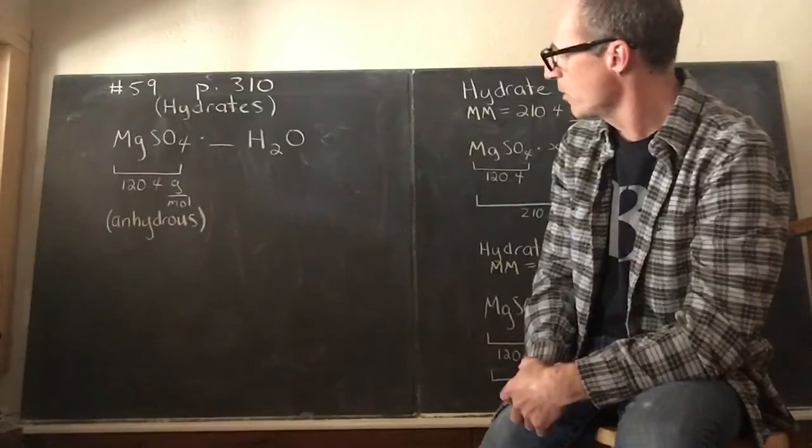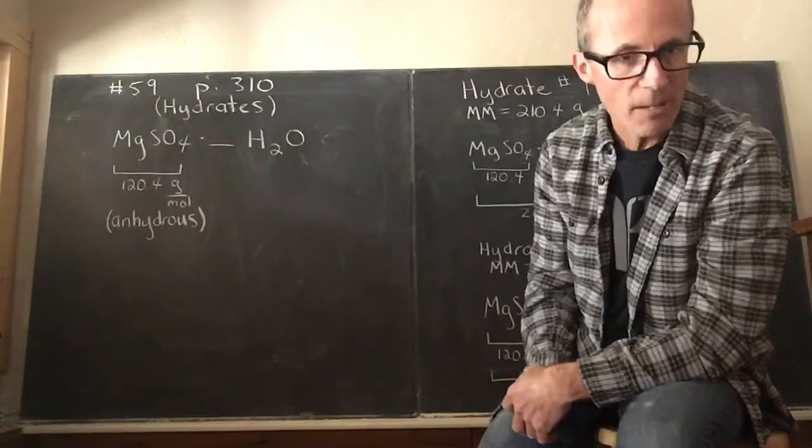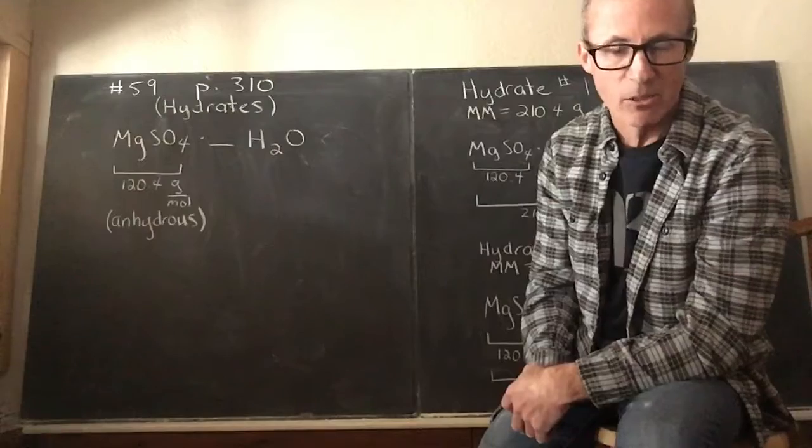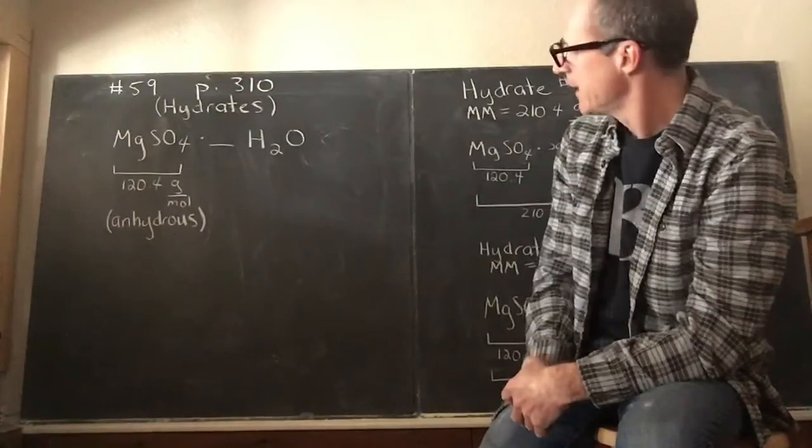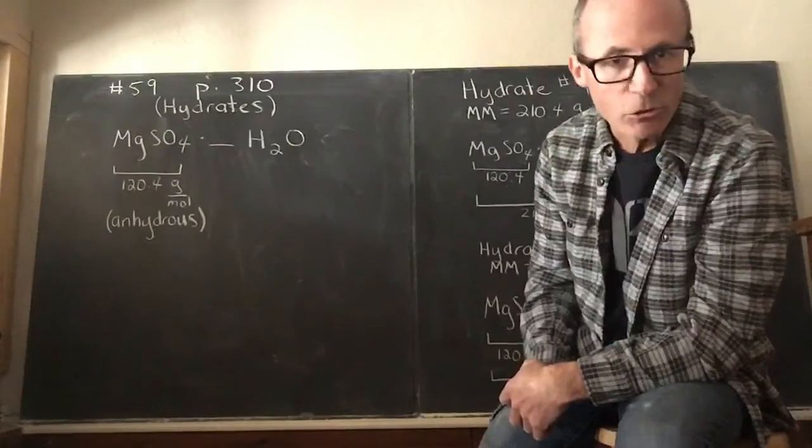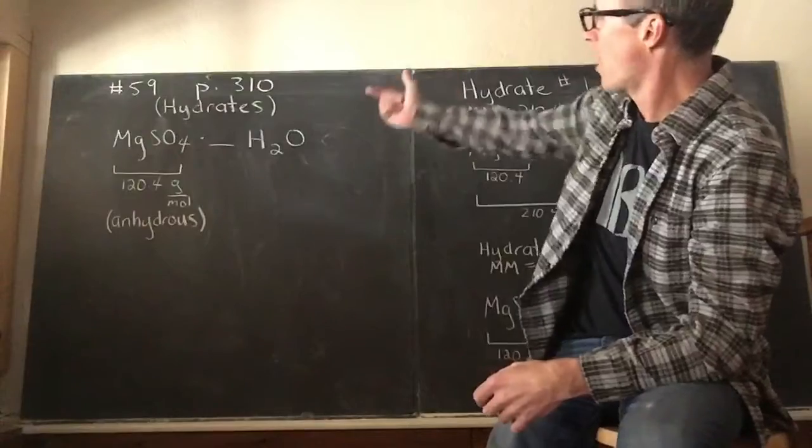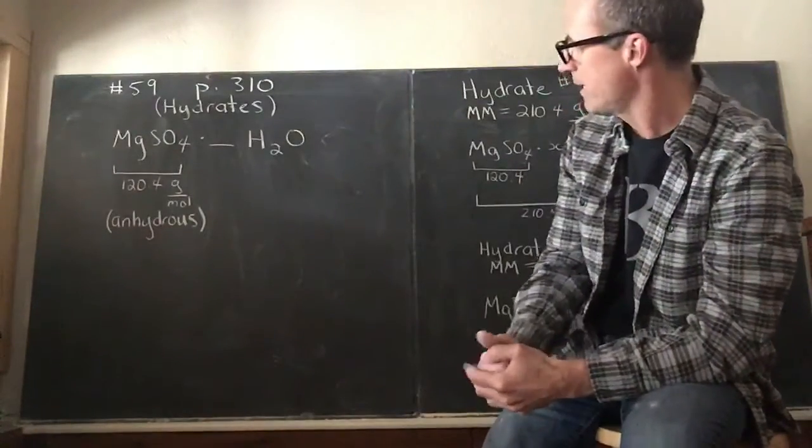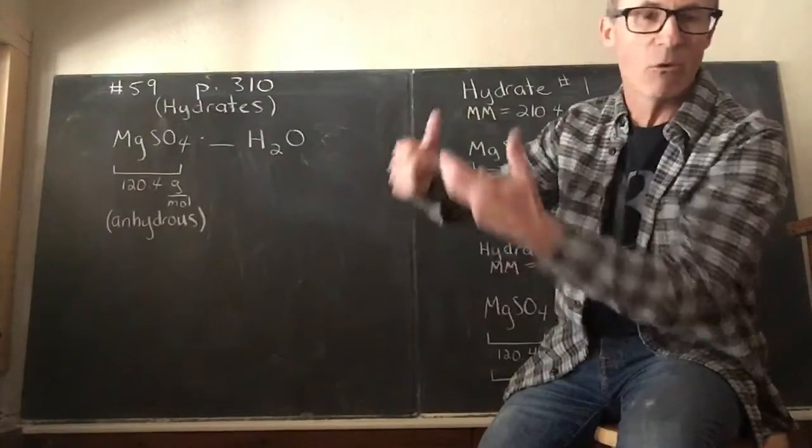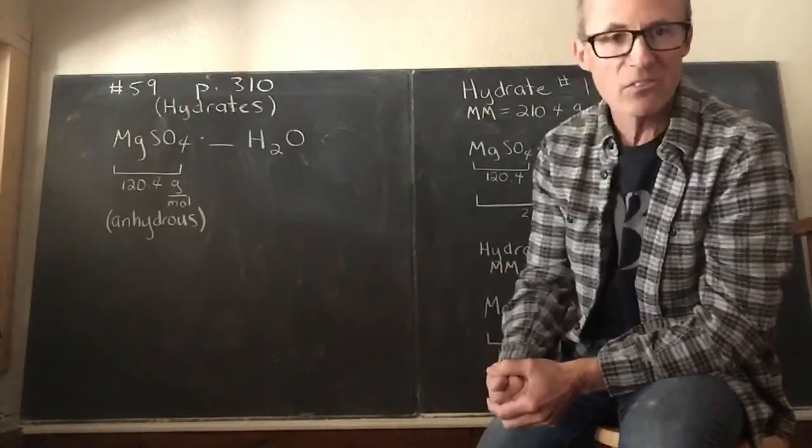From our discussion before, we know that hydrates contain water as part of their chemical formula, and we did a lab on this where we dehydrated cupric sulfate. Here's an example where we have magnesium sulfate, and they're not telling you what the value of X is. So it could be a monohydrate where X would be one, it could be a dihydrate, or it could be a pentahydrate or a decahydrate for all we know. But they are giving us some key information.